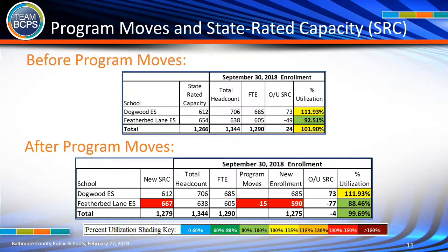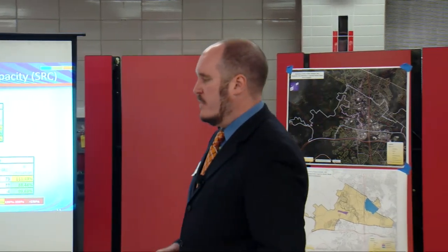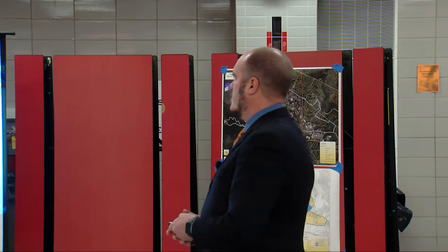Looking at the utilization, Dogwood before any program moves is at 112% utilized. Featherbed Lane is about 92-93% before any program adjustments. With those program moves, the utilization of Featherbed Lane goes from 92% down to 88%, giving more capacity to work with. Dogwood is at 111-112%, so this opens up an opportunity to try to bring both schools as close to 100% as possible with this two-part strategy.